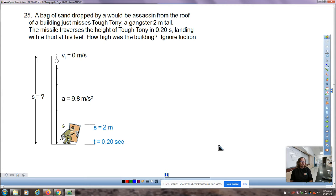Question number 25 is difficult. A bag of sand is dropped by a would-be assassin from the roof of a building and just misses Tuftoni, a gangster that is two meters tall. The missile traverses the height of Tuftoni in 0.2 seconds, landing with a thud at his feet. How high was the building? Remember what we talked about in the last homework assignment? We need to figure out the speeds around Tuftoni in order to solve this.